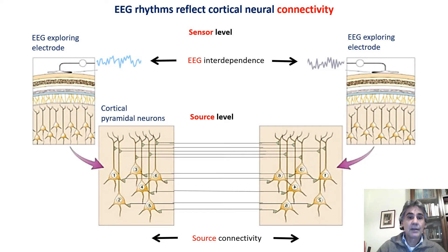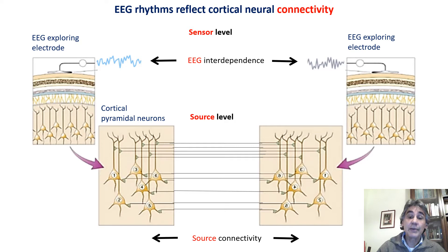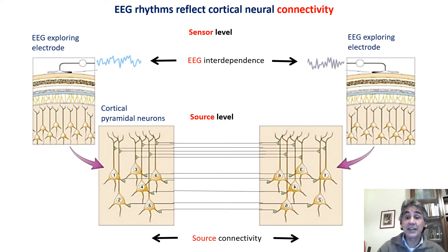One approach to the study of resting state EEG is to study the interdependence of EEG activity at electrode pairs. Another approach is to study the connectivity of the sources of the scalp EEG activity, which requires mathematical algorithms to account for head volume conduction effects. One should be very cautious in interpreting the results of this procedure due to the lack of a unique solution to the inverse problem.